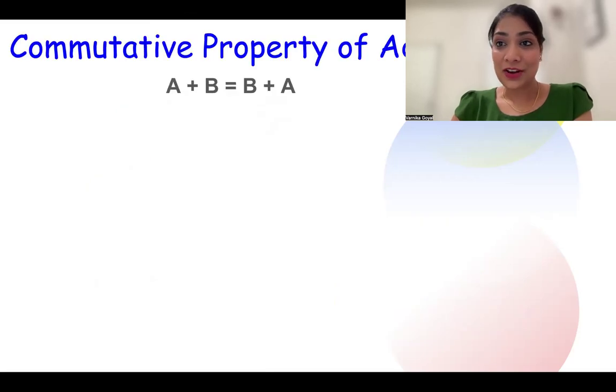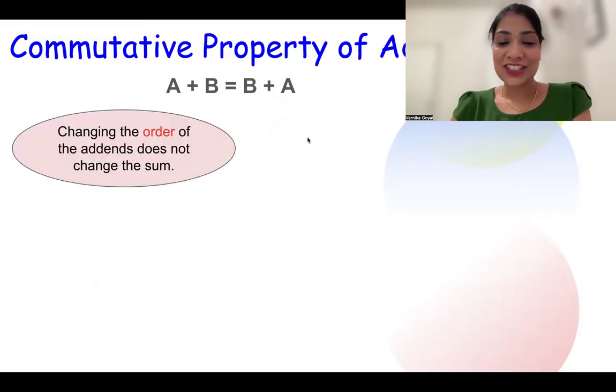The commutative property of addition means changing the order of the addends does not change the sum. That means if the numbers are a and b and we add them, the resultant sum would be the same as adding b + a.